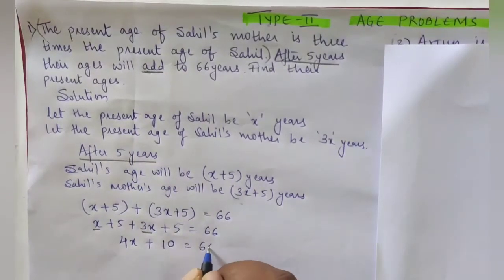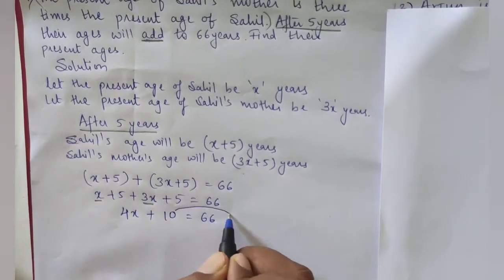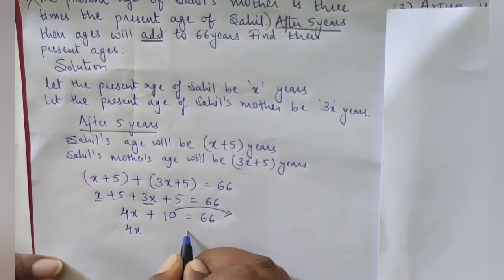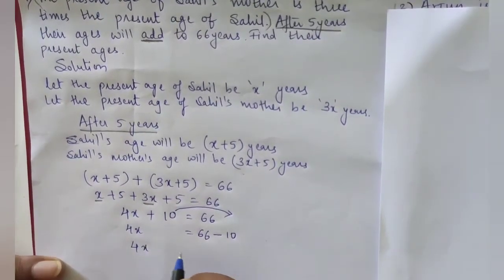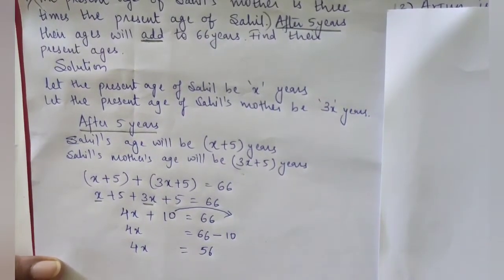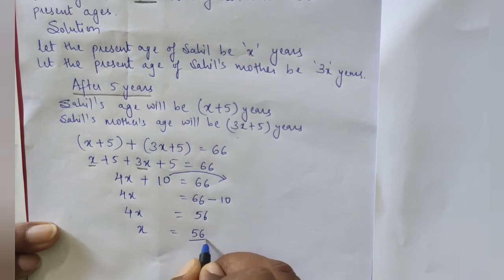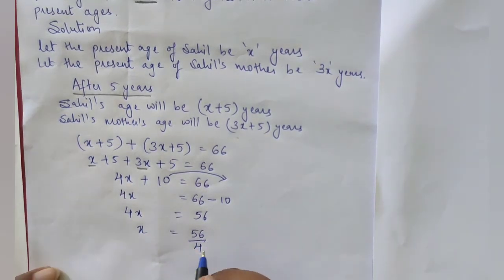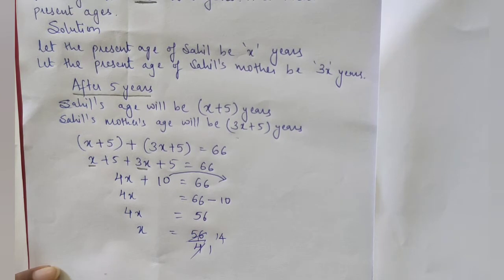Next step: transpose 10 to the other side. So 4x = 66 − 10, which gives 4x = 56. Now x = 56 ÷ 4. Dividing: 56 ÷ 4 = 14. So the value of x is 14.